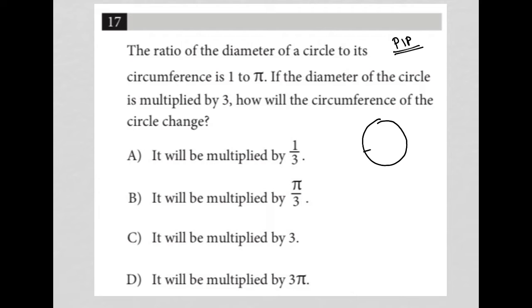I'm going to draw a circle. I have a diameter there, and obviously I have a circumference. It says that the ratio is 1 to π. I'm going to label my diameter as d. I'm going to label this as c for the circumference.